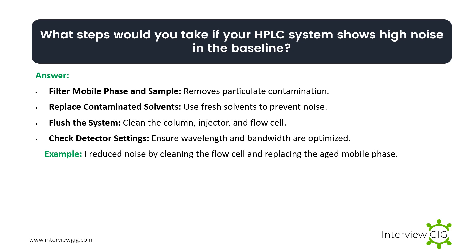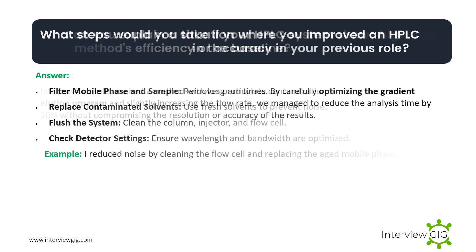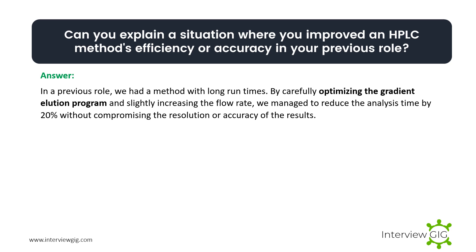What steps would you take if your HPLC system shows high noise in the baseline? Filter mobile phase and sample to remove particulate contamination. Replace contaminated solvents — use fresh solvents to prevent noise. Flush the system and clean the column, injector, and flow cell. Check detector settings — ensure wavelength and bandwidth are optimized. Example: I reduce noise by cleaning the flow cell and replacing aged mobile phase.